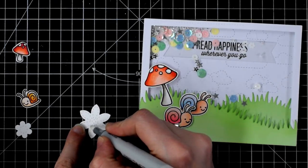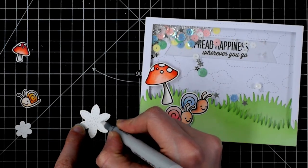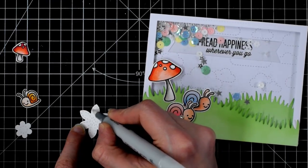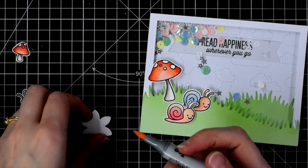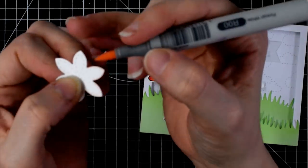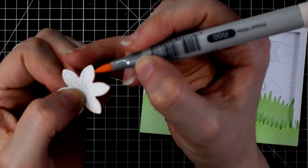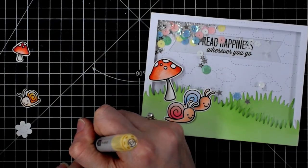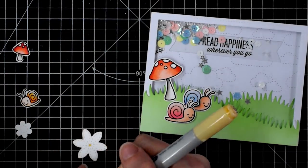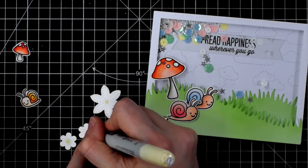So these flowers are from MFT, the Stitched Flower Dynamics and I'm adding some colorless blender, my Copic colorless blender to the edges and then coming in just with the tip of an R00 and that gives the edges a real subtle pink tint, almost like a real daisy.